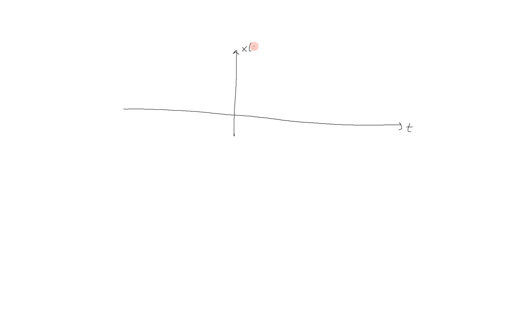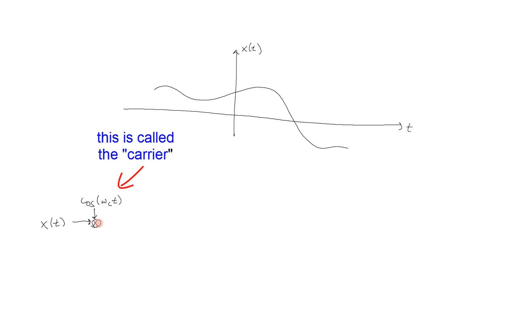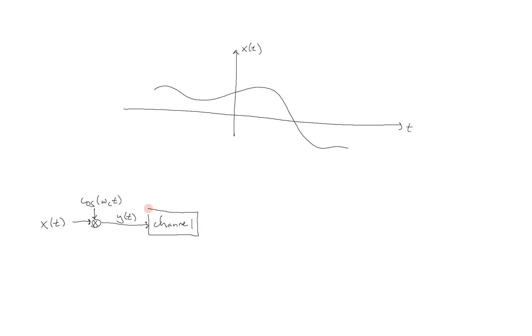I will start off by illustrating the overall process. Suppose that in the time domain, we start off with an arbitrary signal x(t), and it can be anything. What we're going to do for amplitude modulation is we are going to take our signal x(t) and multiply it by a cosine with a frequency of omega sub c. From this, we get an output signal y(t), which is x(t) multiplied by cosine of omega_c * t. This is the signal that we're actually going to transmit, and that's going to go through what we call the channel. The channel can be either the wireless airwaves, through a wire, or any other medium, and there will be some kind of noise introduced at this point, but we're not going to focus on that in this tutorial.